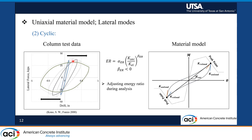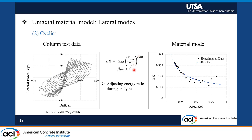Column tests also revealed that as you push the column farther and farther from the yielding point, the hysteresis loops get bigger and bigger. To capture such behavior, the team related the energy ratio to the secant slope, which is the slope of the line connecting the maximum deformation achieved on either side of the backbone. So as you push the column farther and as this slope gets shallower, the energy ratio increases since the power here is negative. There is a clear trend between the extracted energy ratio from column tests and the secant slope through a power function, as shown here.